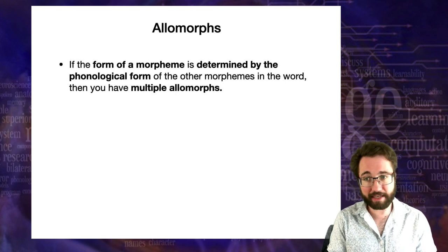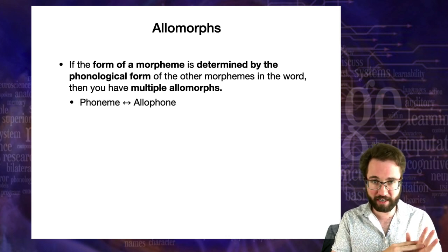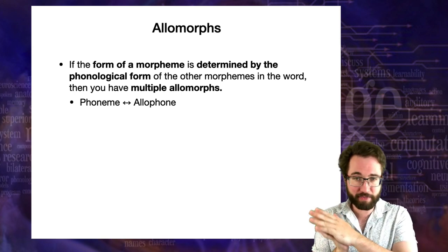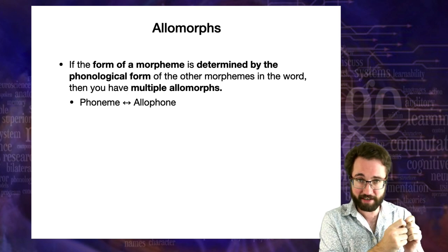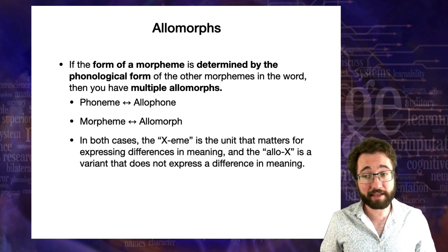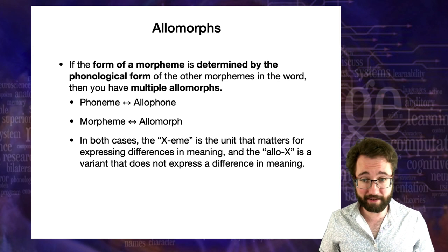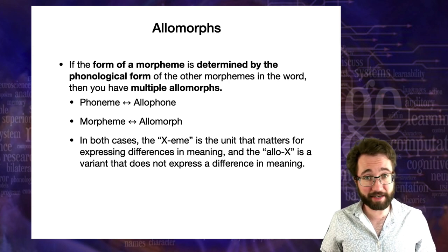If the form of a morpheme is determined by the phonological form of other morphemes in the word, then you have allomorphs. This is analogous to phonemes and allophones from phonology. A phoneme meaningfully contrasts with other phonemes to distinguish meanings; an allophone does not contrast with another sound to distinguish meaning. Similarly, a morpheme is the unit that matters for distinguishing meaning, whereas an allomorph is a variant determined by the application of regular phonological rules, not expressing a difference in meaning.